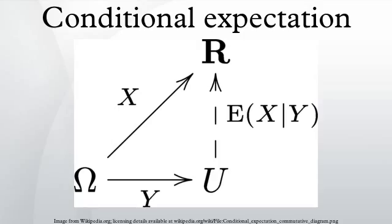Formal definition — conditional expectation with respect to a sub-sigma algebra: Consider the following. Let (Ω, F, P) be a probability space, X a random variable on that probability space, and G a sub-sigma algebra of F. Then a conditional expectation of X given G, denoted E[X|G], is any G-measurable function which satisfies the defining integral property. The existence of E[X|G] can be established by noting that a certain measure on G is absolutely continuous with respect to P.